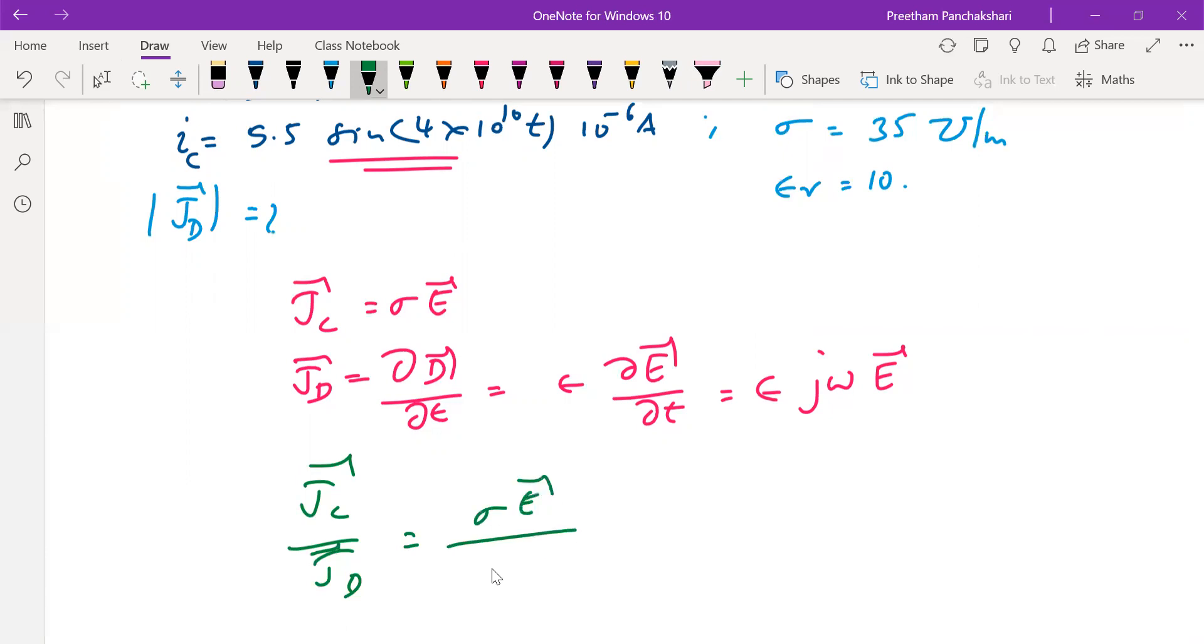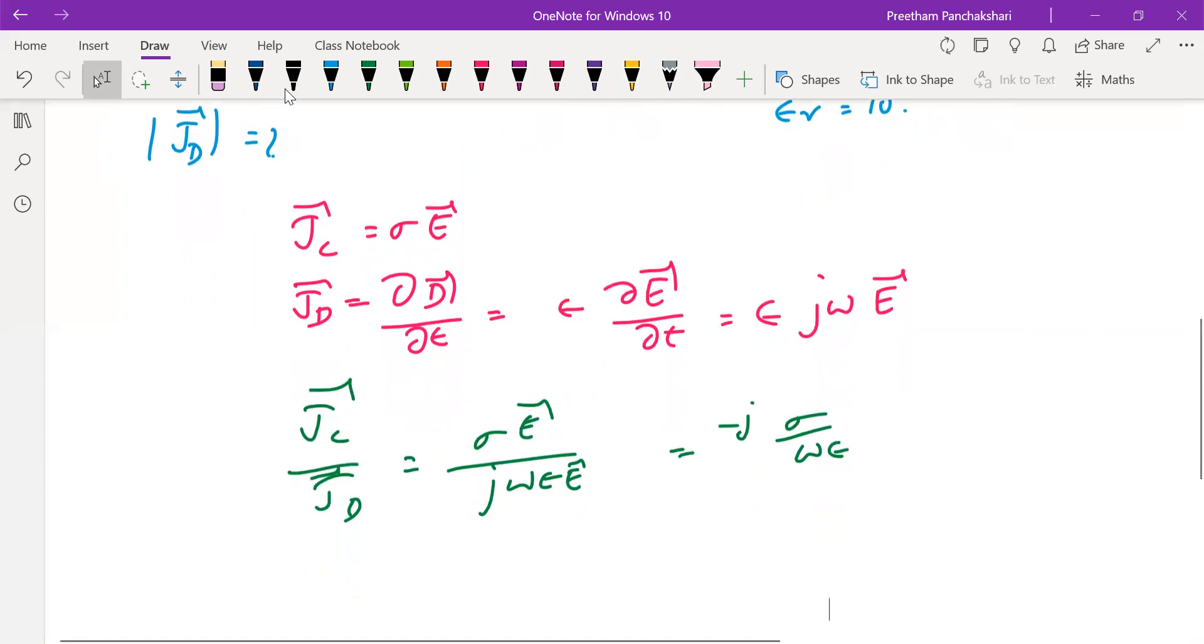σE by jωεE. If E get cancelled, -jσ/(ωε). Here minus j stands for the phase shift of minus 90 degrees, which can also be expressed as tan angle of minus 90 degrees or 270 degrees.